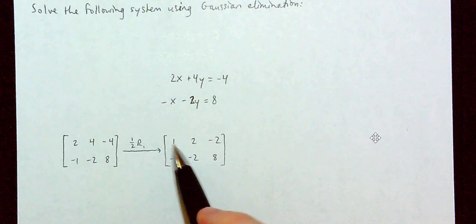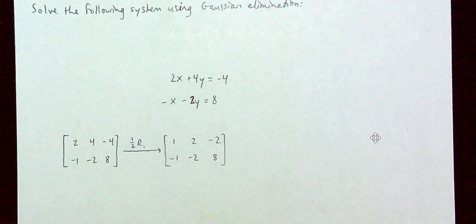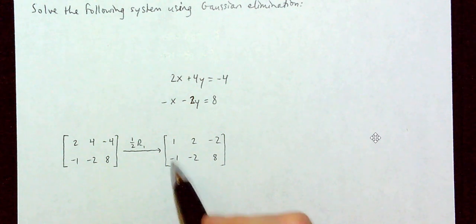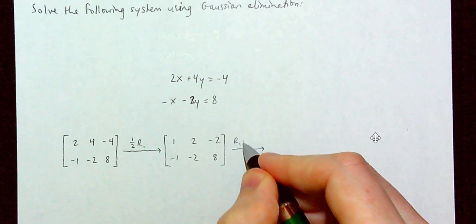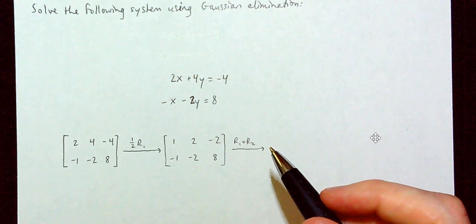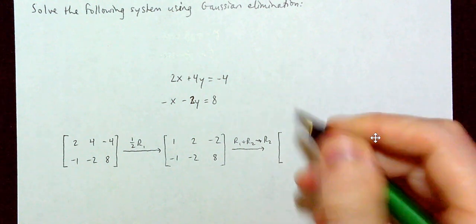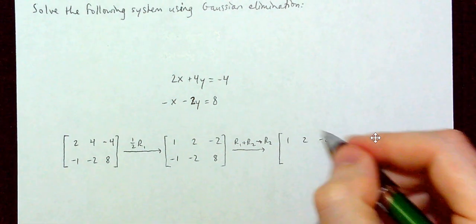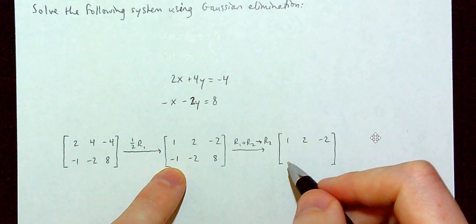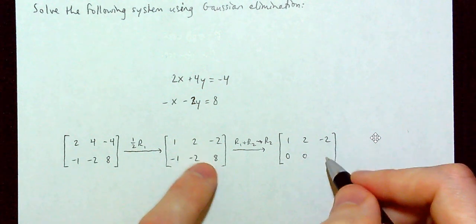We have a 1 here and I need a 0 here. I can do that by adding row 2 onto row 1 — we say row 1 plus row 2 becomes the new row 2. So we get 1, 2, negative 2 for row 1. For the changed row: negative 1 plus 1 gives 0; negative 2 plus 2 gives 0; and 8 plus negative 2 equals 6.